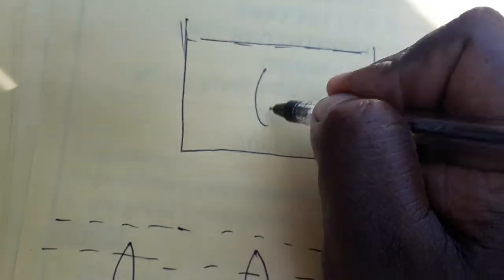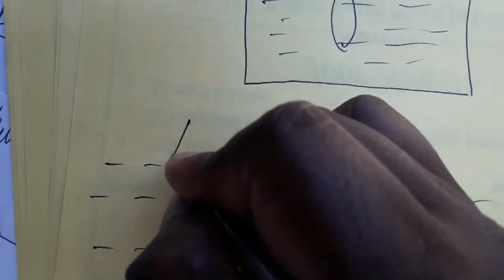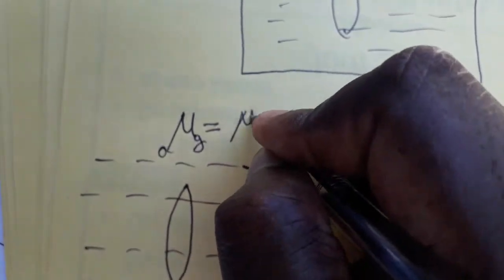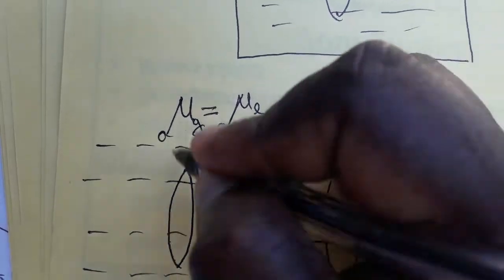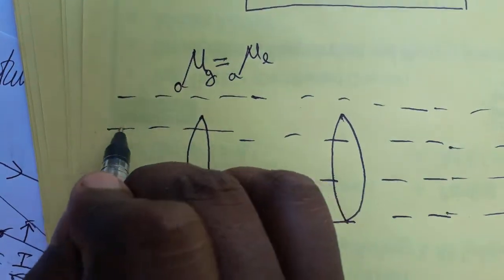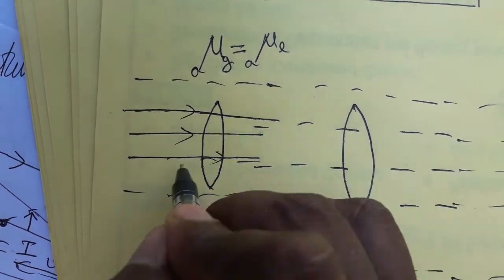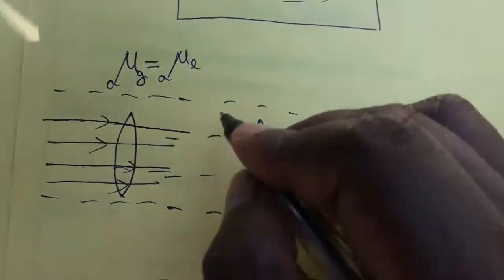Today we are going to see what happens when we immerse a convex and concave lens inside a liquid. First case: the refractive index of air-to-glass is equal to the refractive index of air-to-liquid. When the refractive index of the liquid and the refractive index of glass are equal, the convex lens behaves like a transparent medium — there is no change in refractive index.